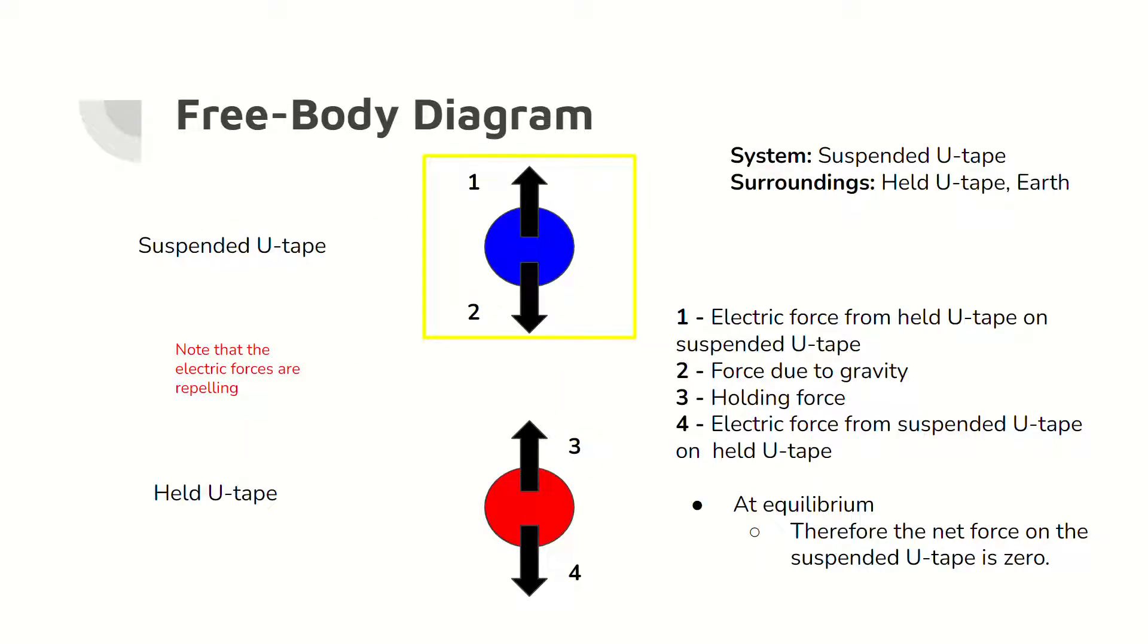Here is a free body diagram of the interaction between the held u-tape and the suspended u-tape, in which both tapes are repelling each other. For the suspended tape to float, it must be in equilibrium. This means that the net force of the tape is zero. The system is the suspended u-tape, and the surroundings include the held u-tape and the earth, which exert forces on the system.